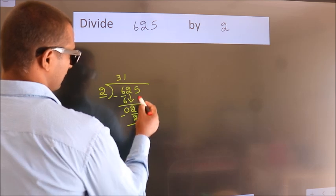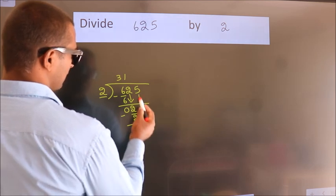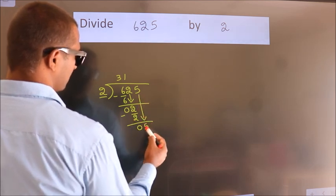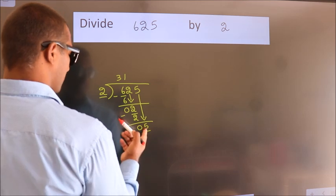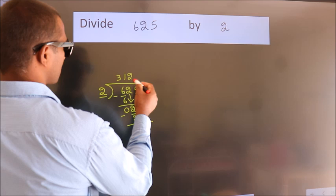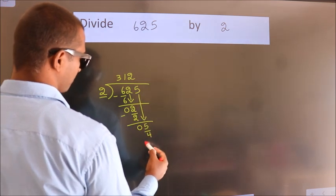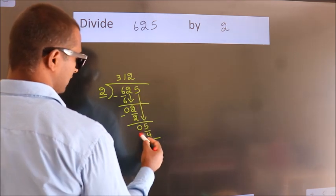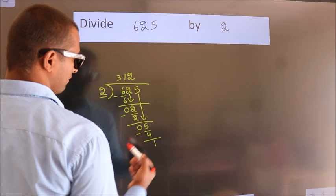After this, bring down the next number: 5. A number close to 5 in the 2 table is 2 times 2, which is 4. Now we subtract and get 1.